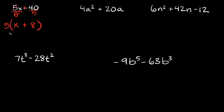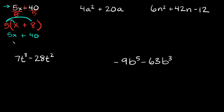If you ever want to check your answer, all you have to do is distribute it — you should wind up back where you started. So let's distribute: take this 5 and multiply it by the first term, 5 times x equals 5x. Then multiply it by the second term, 5 times 8 equals 40. Bring the plus sign down, and we get 5x plus 40 — back to where we started. So we know our factored answer was correct.